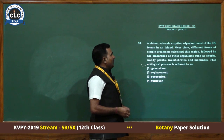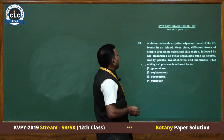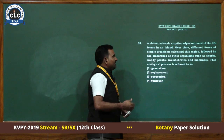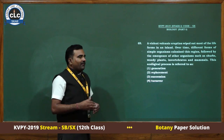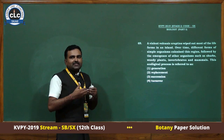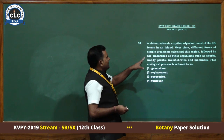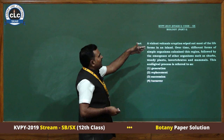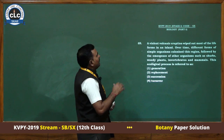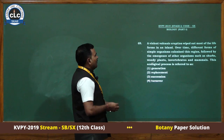Question number 69: a violent volcanic eruption wiped out most of the life forms in an island. Over time, different forms of simple organisms colonized the region, followed by the emergence of other organisms such as shrubs, woody plants, invertebrates, and mammals. This ecological process is referred to as ecological succession — a property of a community involving series of sequential changes of communities on a specific area. Since the area was previously inhabited by life forms before the volcanic eruption, this is the type of secondary succession. The answer is third, succession.